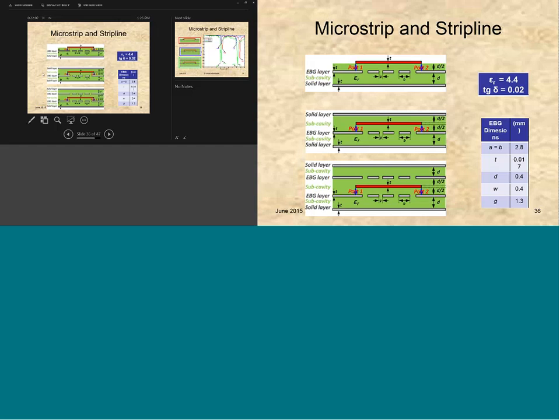All right, now I've been showing microstrip results where the trace is on the outside, on the top of the bottom of the board. So now what we want to do is, well, what happens when we're on the inside of the board? A stripline configuration. Do we have to have the EBG layer above and below as the bottom picture shows, or can we get away with just on one side?